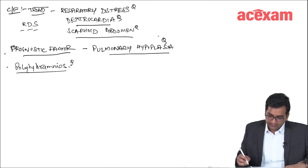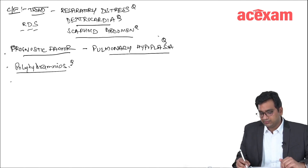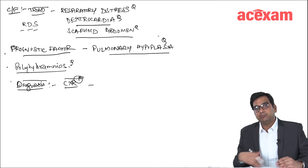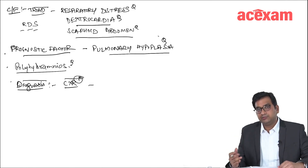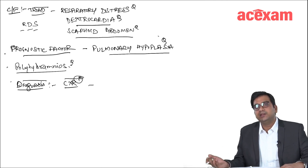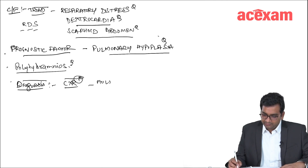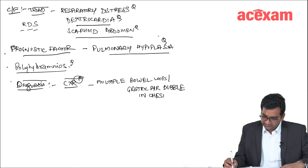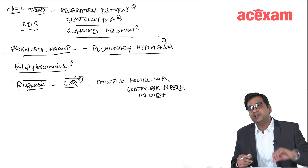How to diagnose? The diagnosis is made by chest X-ray. What we will see on chest X-ray is herniation of multiple bowel loops and the stomach into the chest, most commonly on the left side. There is presence of gastric air bubbles, bowel loops, or air-fluid levels in the chest. And whenever we try to insert a Ryle's tube, we can see it coiling into the chest.